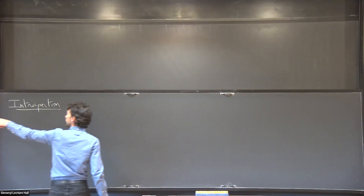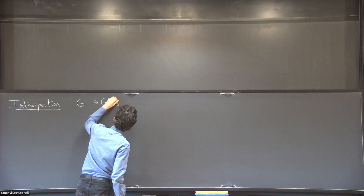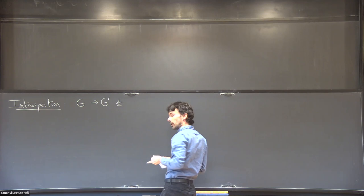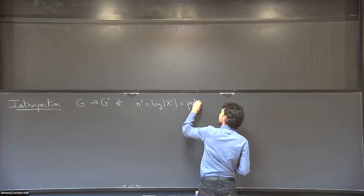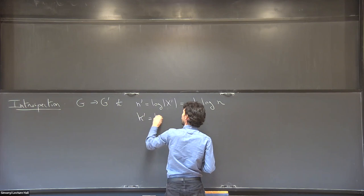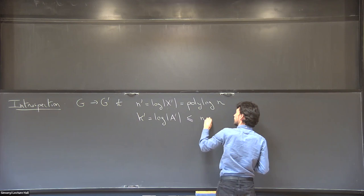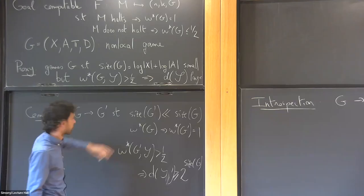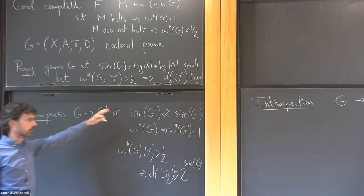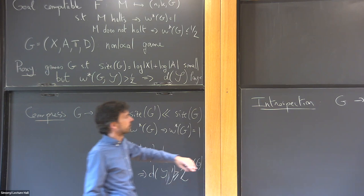Introspection is one of three parts of this compression procedure. It's a computable map from games G to games G-prime such that it reduces the number of questions: n-prime, the size of the question set of G-prime, will be much smaller than n. But k-prime, the number of answers, will be slightly bigger than before. The two other steps had the effect of reducing the number of answers and also a necessary amplification step.